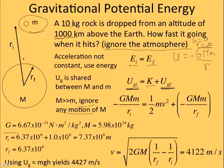And so we know what G is. We know what the mass of the Earth is. The initial radius would be the radius of the Earth plus the altitude. That's 1000 kilometers in meters. And then the final was the radius of the Earth.